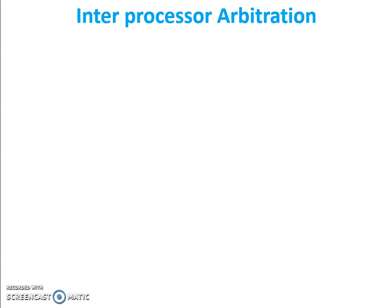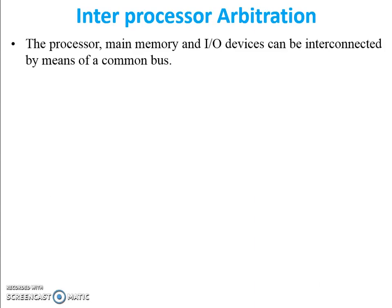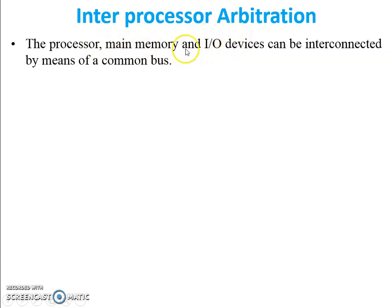The system consists of processors, main memory, and input/output devices. These can be interconnected by means of a common bus. For example, an input/output device accessing main memory or a processor needs to communicate through this common path, called the common bus or communication path bus.